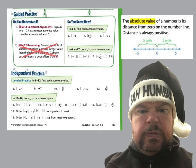Next we're going to jump to page 163 and go to the guided practice. Number one says: explain why negative seven has a greater absolute value than the absolute value of six. Even though negative seven is a negative number and six is positive, negative seven has a greater absolute value because it is farther away from zero. The distance to zero is greater, so that's the reason it has a greater value.